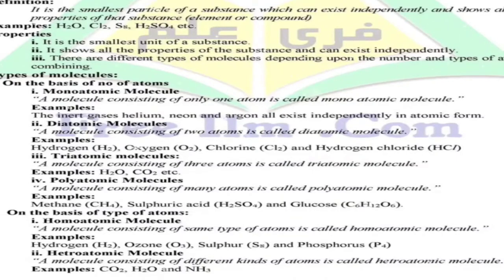Properties: It is the smallest unit of substance, it shows all the properties of the substance and can exist independently. There are different types of molecules depending upon the number and types of atoms combined.